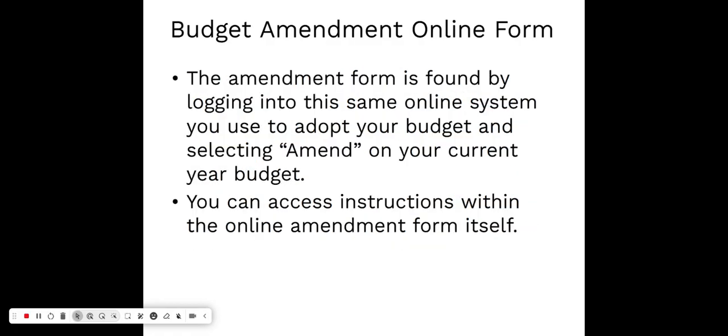The budget amendment form is an online form, just like your budget, within the same system. You go back to your existing current year budget and you'll see a button to amend. It generates a very simple one-page form that you fill out, which then needs to be published in your newspaper and approved within the budget system. There is a button for instructions found within the budget system within the amendment itself, should you need to go through that process.